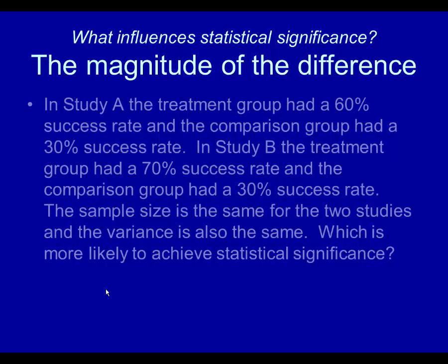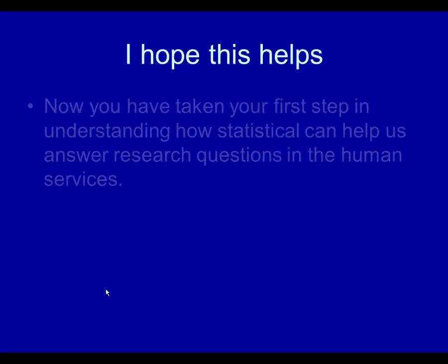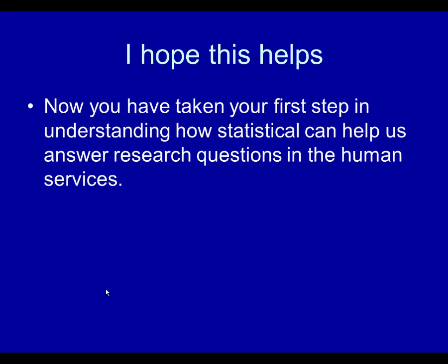The magnitude of the difference is also an influence. If in Study A the treatment group had a 60% success rate and the comparison group 30%, and in Study B the treatment group had a 70% success rate and the comparison group 30%, with sample size and variance the same for both studies, the one with a greater magnitude of difference is more likely to achieve statistical significance. I hope this has been helpful in understanding some very basic concepts in statistics. There's a lot more to learn, but this is the first step.